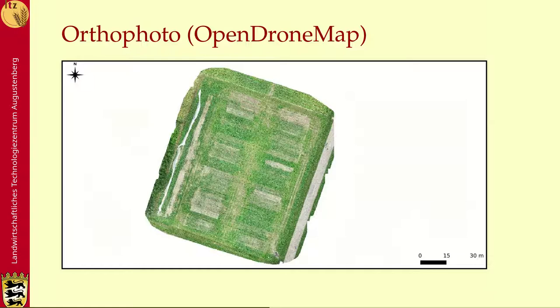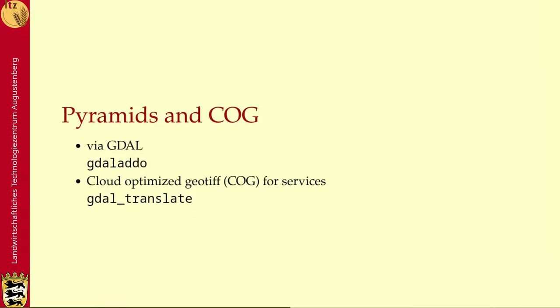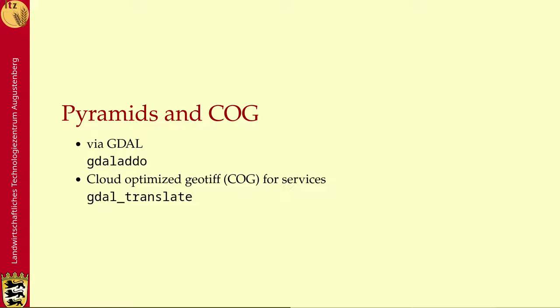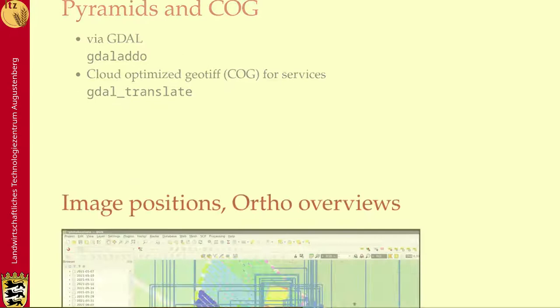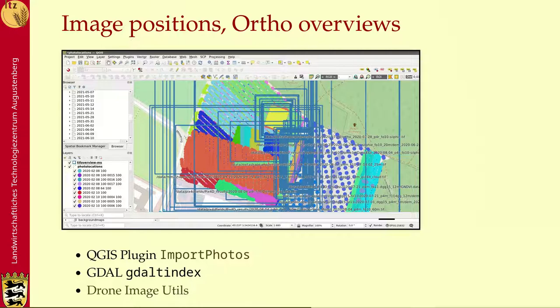This is the height model together with the positions where the images were taken — you see these as white dots here. The orthophoto is one of the most important results; this one was created with OpenDroneMap. The large images have to be post-processed, so we create pyramids and cloud-optimized GeoTIFFs from them. This can all be done with GDAL, which is free software in the GIS world. Our metadata from the images are taken — we have the images, the positions, and an orthophoto overview, so we have the inputs and results all together, and this can be done with QGIS and GDAL, or alternatively with the drone-image-utils.